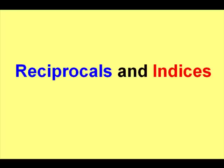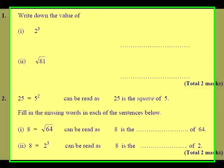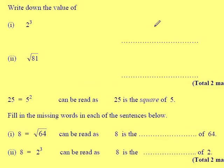Reciprocals and indices. Question 1. 2 cubed we know is 2 times 2 times 2, so the answer is 8.